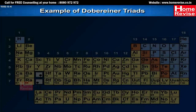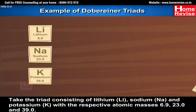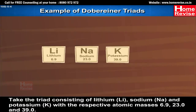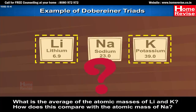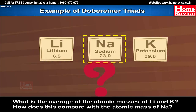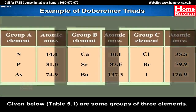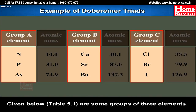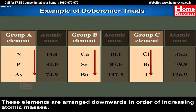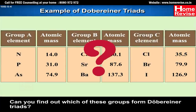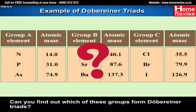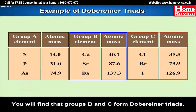Example of Dobereiner's Triad: Take the triad consisting of lithium, sodium and potassium with respective atomic masses 6.9, 23.0 and 39.0. The average of the atomic masses of lithium and potassium is compared with the atomic mass of sodium. Elements are arranged in order of increasing atomic masses, and you will find that groups B and C form Dobereiner Triads.